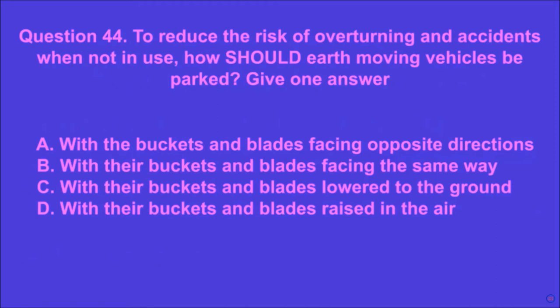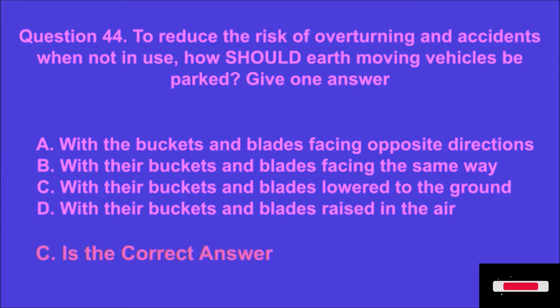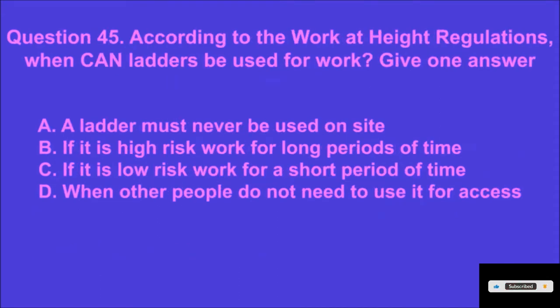Question 44: To reduce the risk of overturning and accidents when not in use, how should earth moving vehicles be parked? Give one answer. A: with the buckets and blades facing opposite directions, B: with their buckets and blades facing the same way, C: with their buckets and blades lowered to the ground, D: with their buckets and blades raised in the air. C is the correct answer.